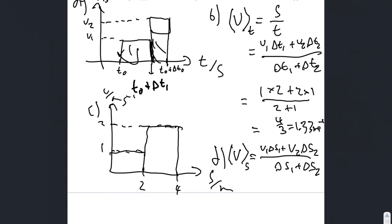So, if we look at the v1 delta s1 here, we know that it is v1 here, delta s1. So, we know it's 1 times 2 plus v2 delta s2. V2 is 2, delta s2 is 2 plus 2 times 2 over the distances, which is 2 plus 2.